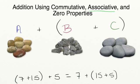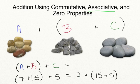If we were to write out the full formula using variables, we would say that (A plus B) plus C is equal to the value of A plus (B plus C).